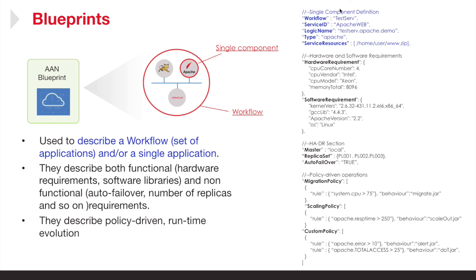For a single component, you have the component described and then you have the hardware and software requirements. You have the replication or auto failover requirements. And finally, you have the policy requirements as expressed in simple rules. For example, a rule that says if the system CPU is greater than x, then execute a particular behavior; or an application-centric behavior that says if the response time from Apache is greater than x or y milliseconds, then take a specific action.